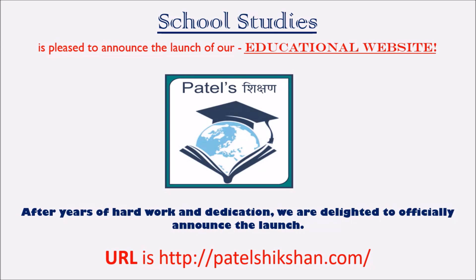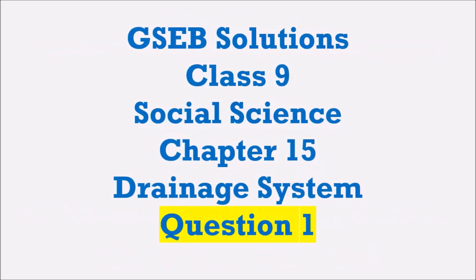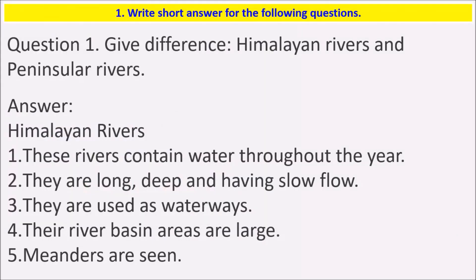Today we will see a video related to NCERT solution Class 9 Social Science Chapter 15: Drainage System, Question 1. Let's solve the textbook exercise of Chapter 15. Question 1 says: write short answers for the following questions. The first question is: give differences between Himalayan rivers and Peninsular rivers.